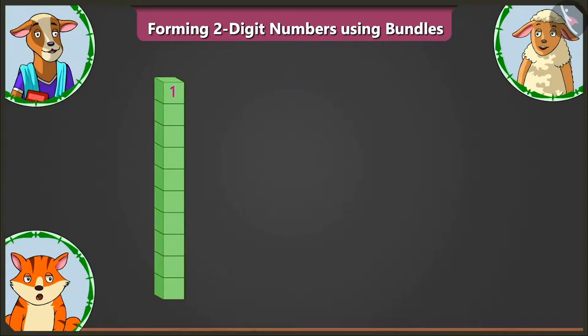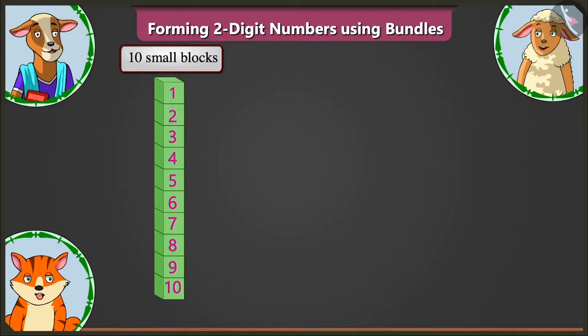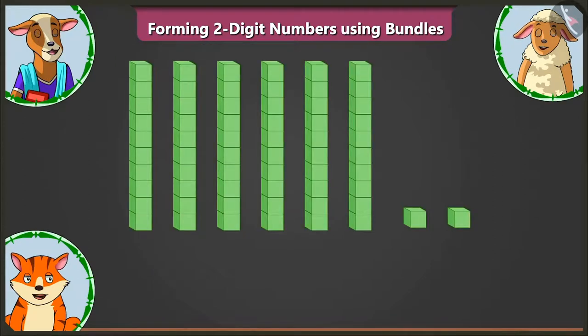Here, in the first big block, there are one, two, three, four, five, six, seven, eight, nine and ten small blocks. Means, there is one tens. Well done, Billy.